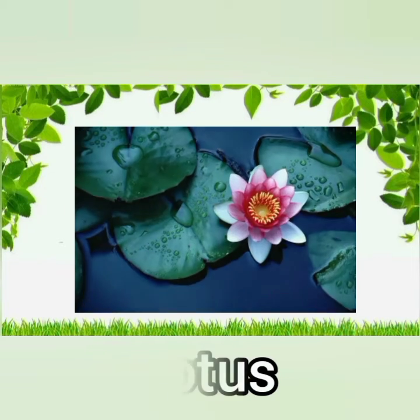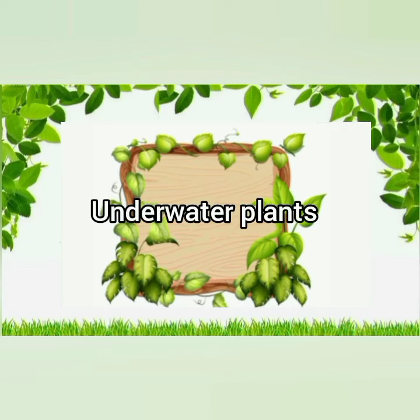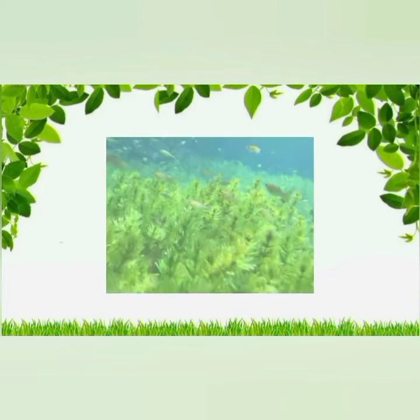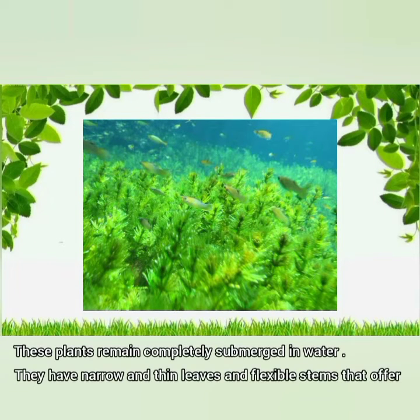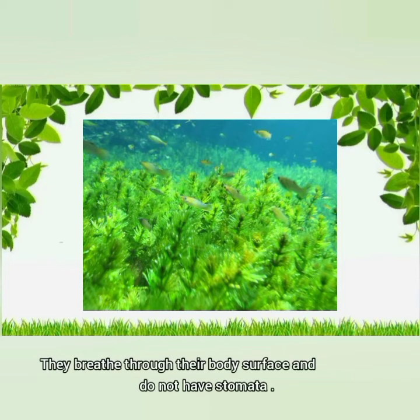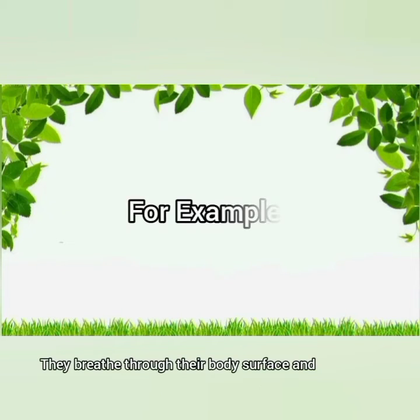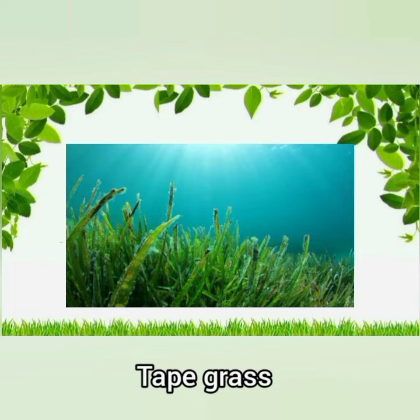Underwater plants remain completely submerged in water. They have narrow and thin leaves and flexible stems that allow little resistance to the water currents. They breathe through their body surface and do not have stomata. For example, hydrilla and tape grass.